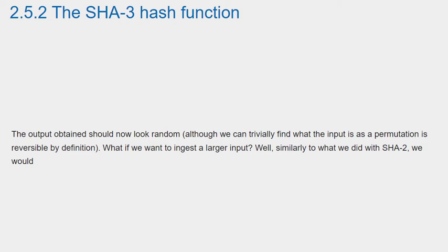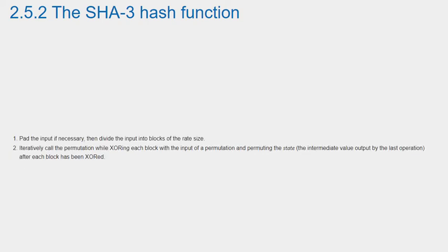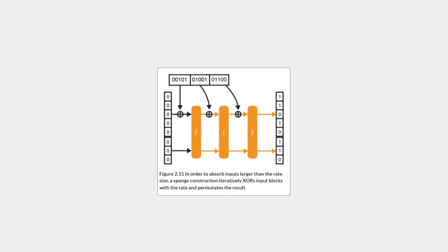What if we want to ingest a larger input? Similarly to what we did with SHA-2, we would: 1. Pad the input if necessary, then divide the input into blocks of the rate size. 2. Iteratively call the permutation, XORing each block with the input of the permutation and permuting the state — the intermediate value output by the last operation — after each block has been XORed. Note that padding is an important step to distinguish between inputs like 0 and 00. Figure 2.15 pictures these two steps.